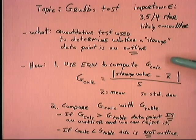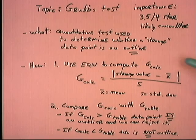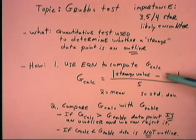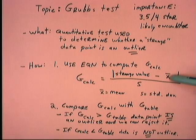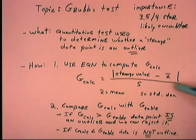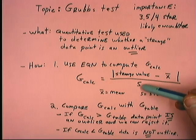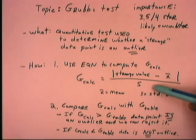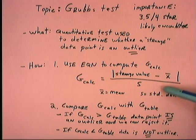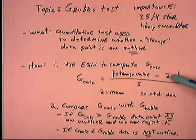We use an equation to compute G_calc, the calculated G value. You take the absolute value of the difference between the possible outlier and x-bar, the mean of the data set, and then divide by s, the standard deviation of the data set. It's important to realize that when computing the mean and the standard deviation, you do include the possible outlier in the computation. That's a point of confusion, but you do want to include it.